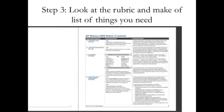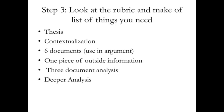Step 3: you have to look at the rubric and make a list of things that you need. You have to earn seven points to get a perfect paper. Some of these points are very easy; some are a little harder. The top item is a thesis statement — if you stay with me I'll give you a thesis statement that I think is a pretty good one. The next one that students often struggle with is contextualization. All the rubric wants you to do is take the events taking place and connect them to the bigger picture of what's going on in the world.